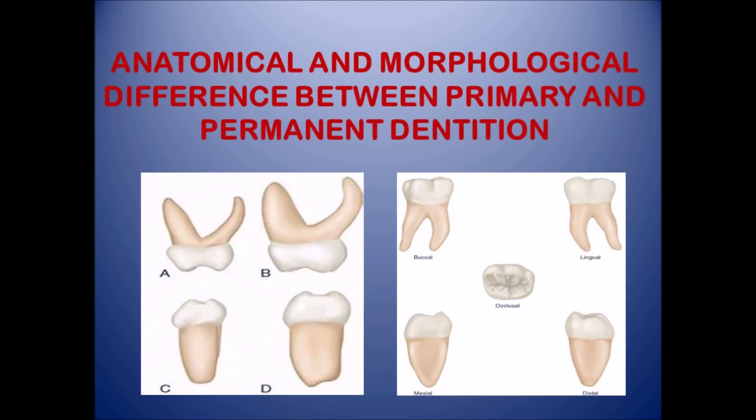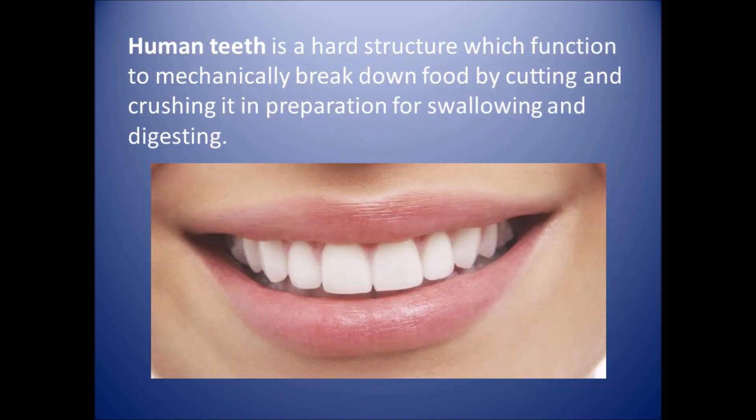Hello friends. Today we are going to learn about anatomical and morphological differences between primary and permanent dentition. Human teeth is a hard structure which functions to mechanically break down food by cutting and crushing it in preparation for swallowing and digesting.